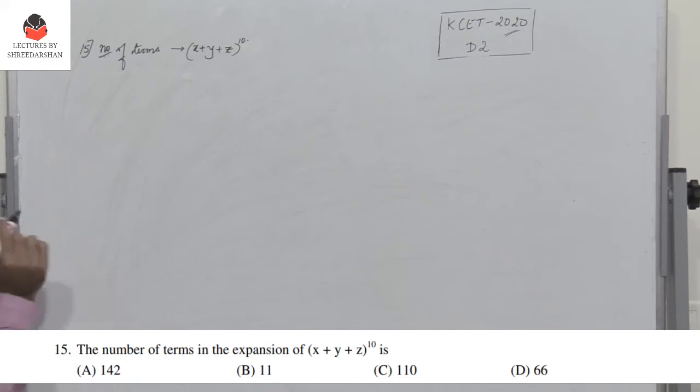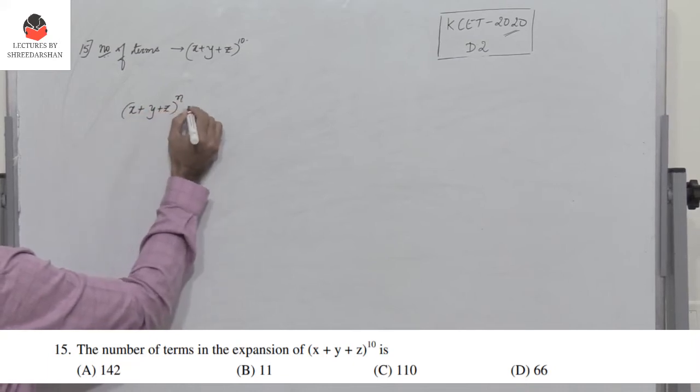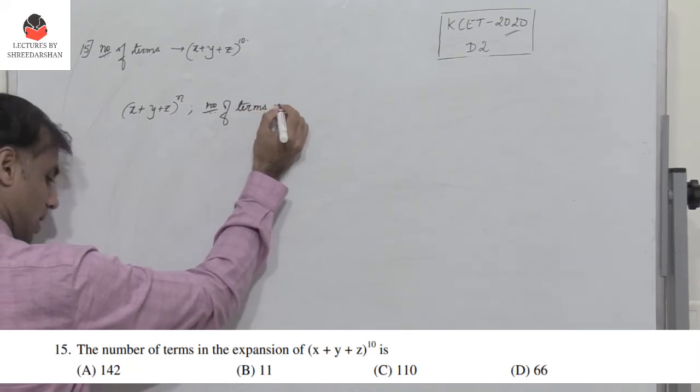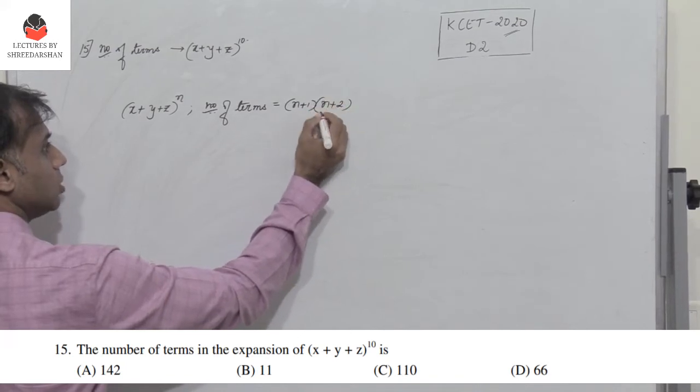So here, there is a very simple formula. If I have (x + y + z)^n, then the number of terms is just given by (n+1)(n+2)/2.